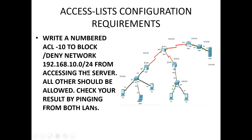We are going to consider a topology containing two LANs: 192.168.20.0 and 192.168.10.0, and a public network where we have the server. The topology has been prepared, IP addresses assigned, and routing configured. We are going to write a numbered ACL 10 — numbers 1 to 99 can be used for standard ACL — to deny the 10.0 network from accessing the server.